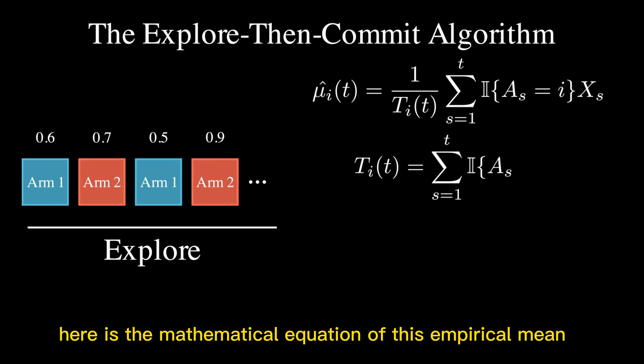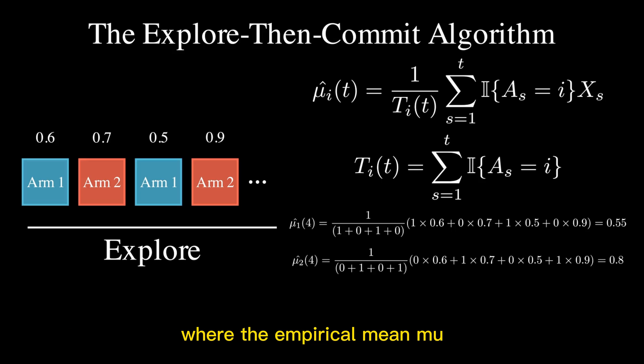Here is the mathematical equation of this empirical mean calculation, where the empirical mean μ_i(t) of arm i at round t equals 1 over T_i(t) times the sum of the indicator function times the reward at each step. Again, after four rounds, the empirical mean of arm 2 is greater than arm 1.